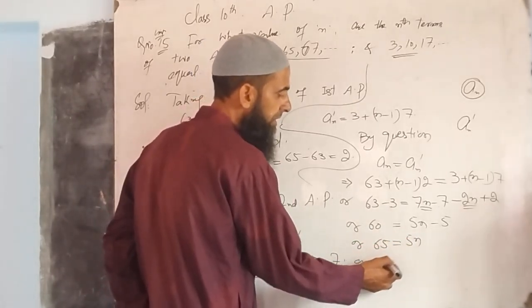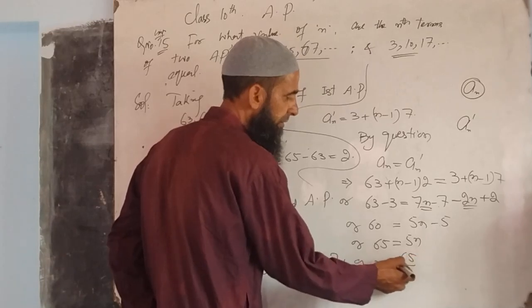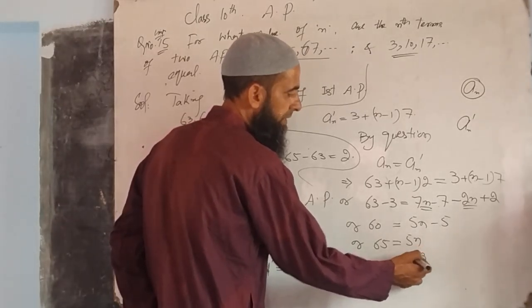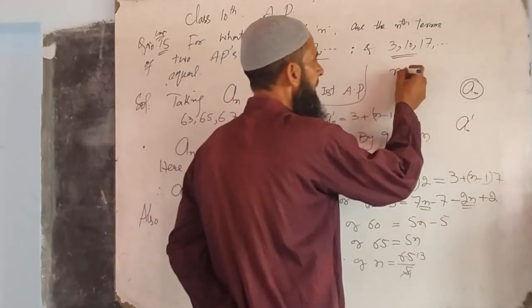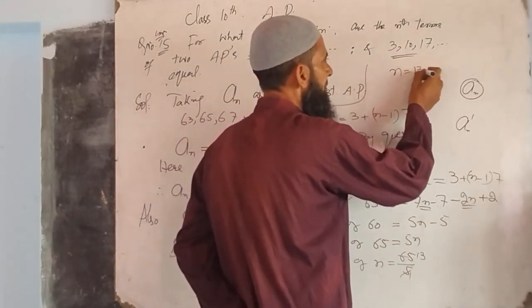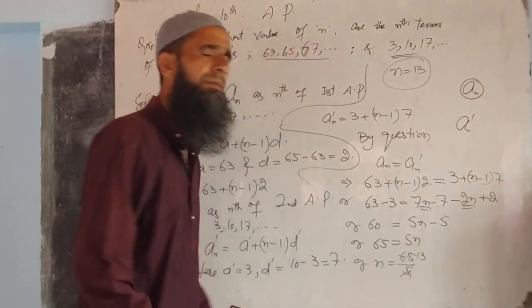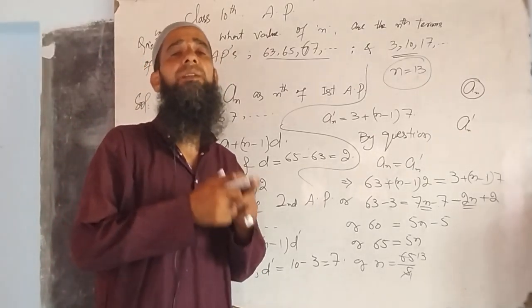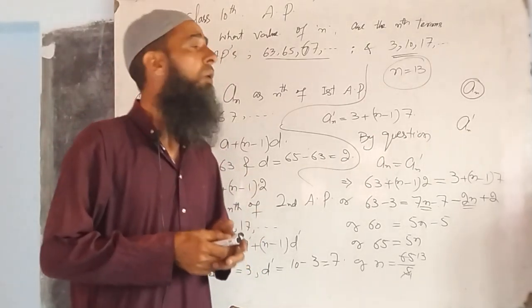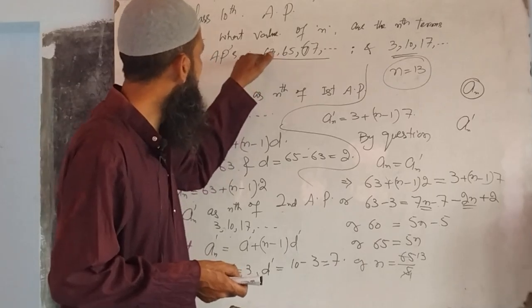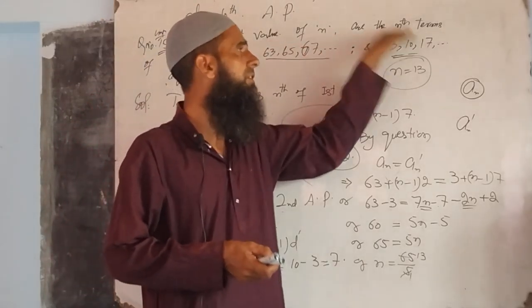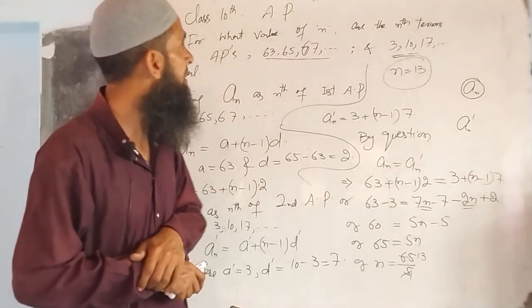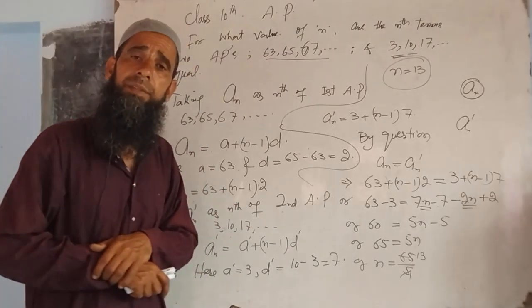So n ka value hamare paas 13 hai. Jab n ka value 13 lenge, 13th term jayega — us case mein 13th term of this arithmetic progression aur is arithmetic progression ka equal hoga. Thank you, have a nice day.